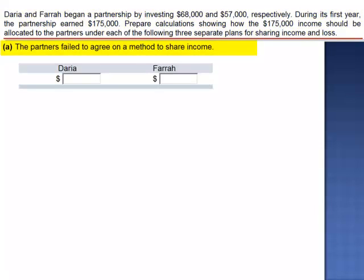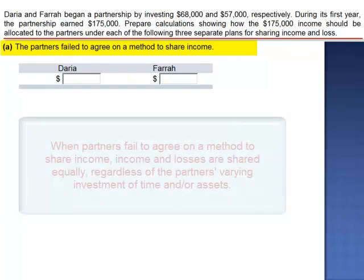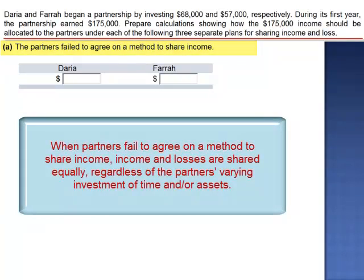Letter A: the partners failed to agree on a method to share income. In this case, the income would be allocated evenly — $87,500 to each.